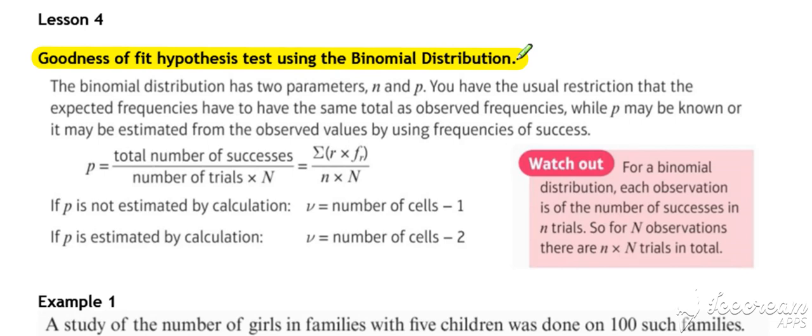So firstly, looking at the goodness-of-fit hypothesis test, or chi-squared test, to see whether something follows a binomial distribution. We need to use our knowledge of the binomial distribution to be able to establish what our expected frequencies should be.